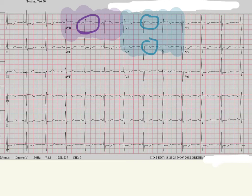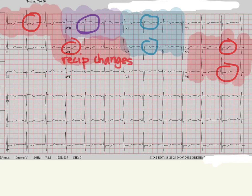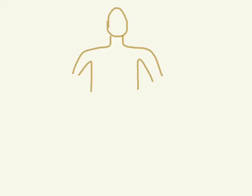Now let's look for some reciprocal changes. What's the opposite of right side? It's the left side — the lateral leads. So the high lateral leads have ST depressions, and the lateral leads here also show reciprocal changes. Now, we don't really have any leads that look at the right side of the heart — most of them are on the left. But if you remember where the precordial leads go — one through six — we can move things around. We take these leads and pop them over on the right side in the exact same spot, calling them 3R, 4R, 5R, and 6R. You've got to put R next to each one on the printout so we know these are right-sided leads.